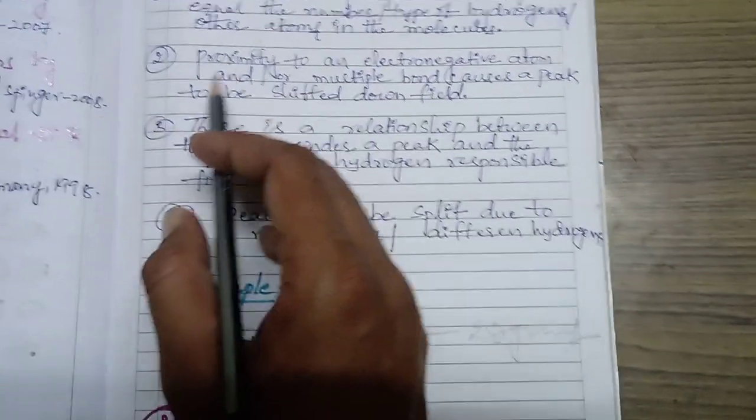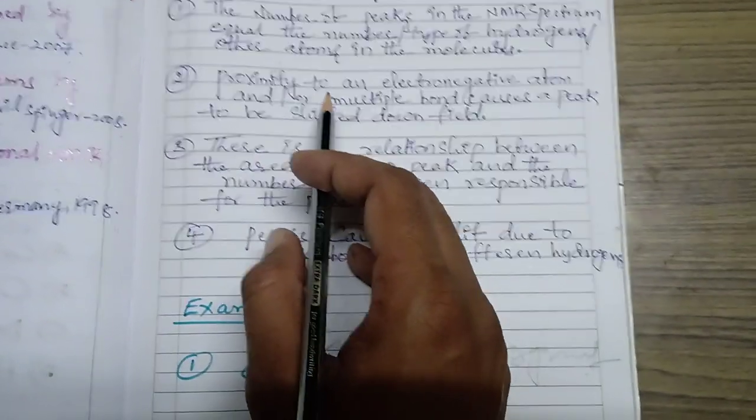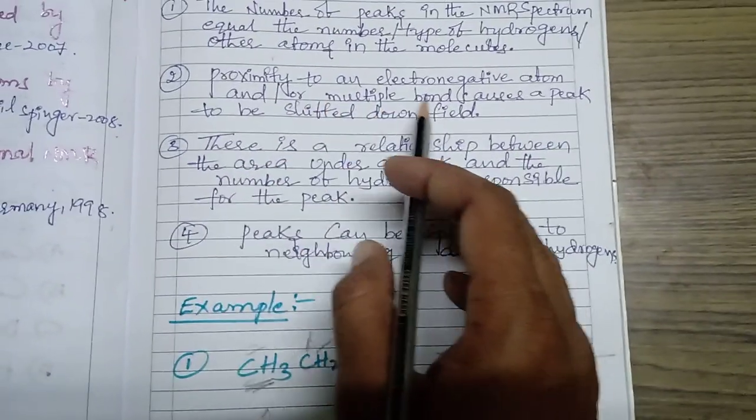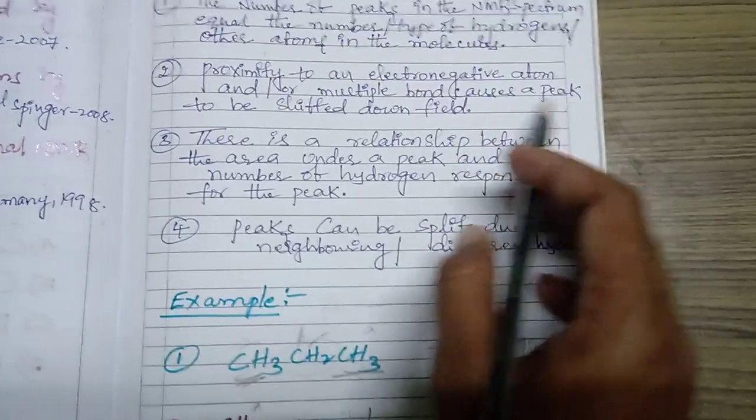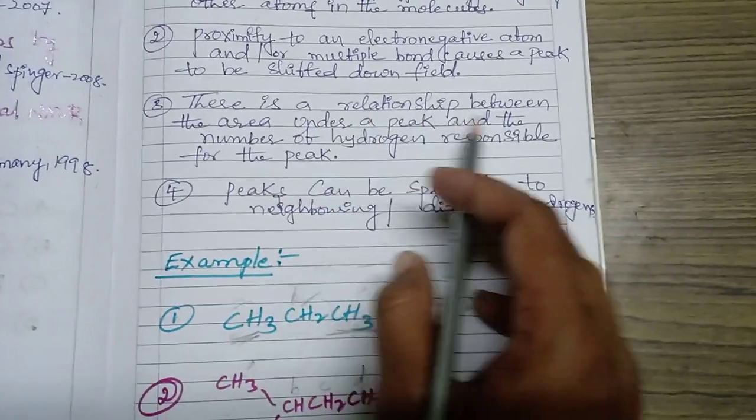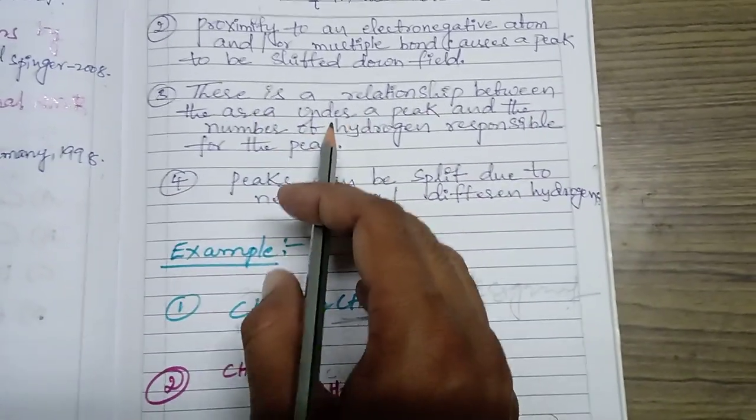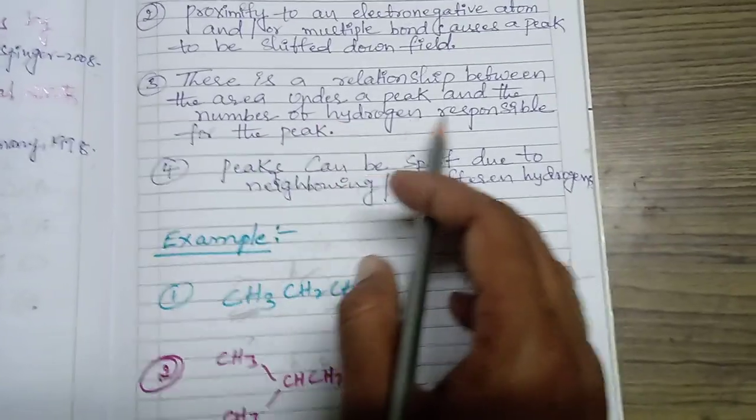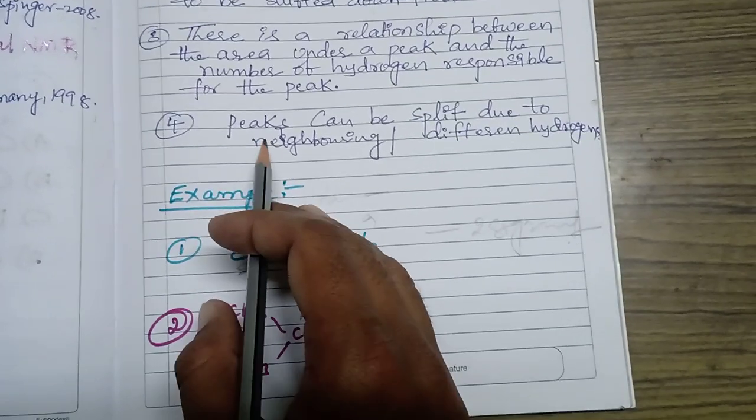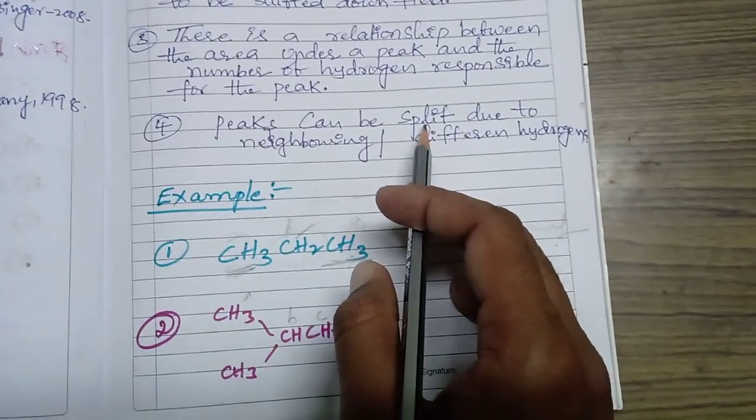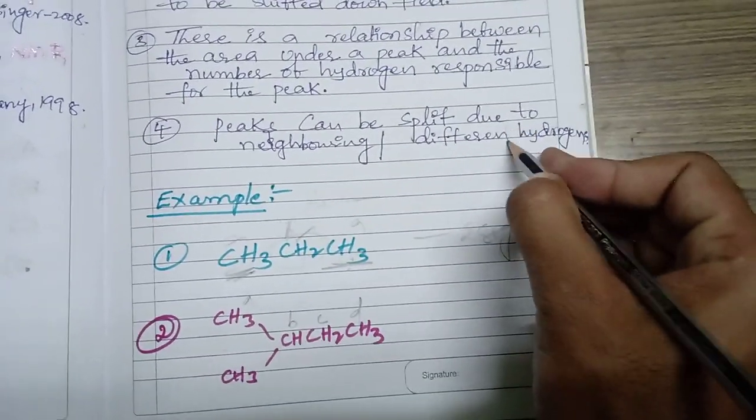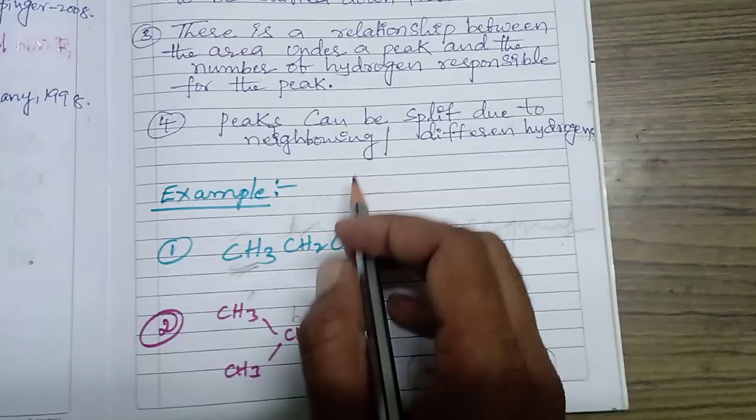Second aspect: proximity to an electronegative atom and/or multiple bond causes a peak to be shifted downfield. Third aspect: there is a relationship between the area under a peak and the number of hydrogens responsible for the peak. Fourth aspect: peaks can be split due to neighboring different hydrogens.